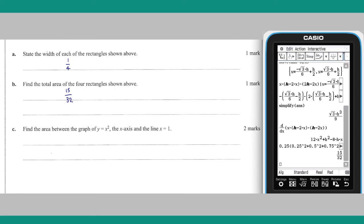Part C: the area between the graph of y equals x squared, the x axis and x equals 1, can be found by evaluating this definite integral.